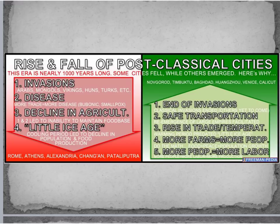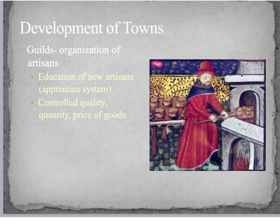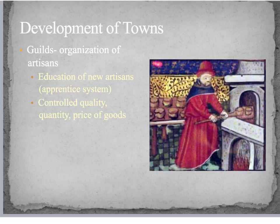New cities rose as centers of trade: Novgorod in Russia, Timbuktu in West Africa, Baghdad in the Middle East, Guangzhou in China, Venice in Italy, and Calicut in India. Another thing that goes along with towns and trade are guilds. A guild is an organization of artisans who all make the same thing — it's like a union, whether all the bakers or all the blacksmiths — formed to regulate the industry. They educated new artisans through an apprentice system, and also controlled quality, how much was produced, and what the prices of goods would be.